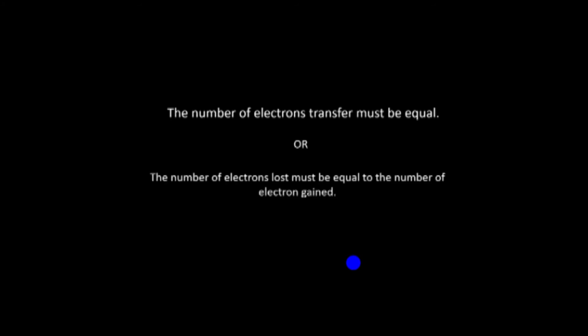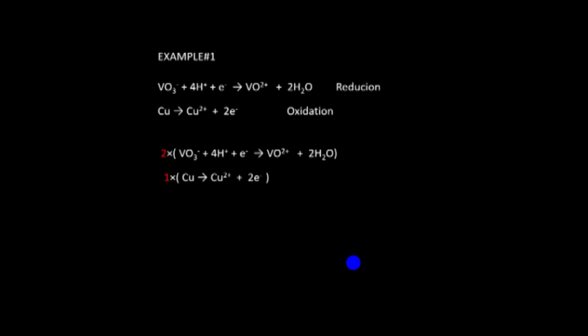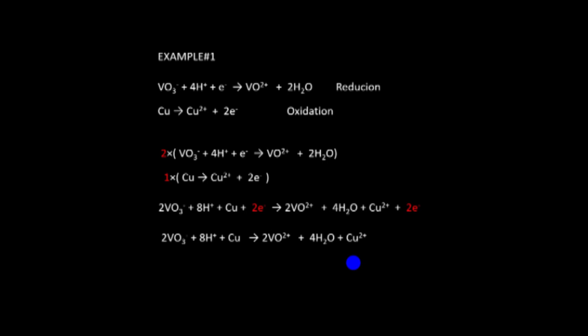For balancing redox equations, the key rule is: the number of electrons lost in oxidation must equal the number of electrons gained in reduction. First find oxidation numbers, then identify the oxidation and reduction half-reactions, then balance electron transfer. In the first example, one electron is gained and two electrons are lost, so we multiply the first equation by two and the second by one. Then add left to left and right to right, cancel the electrons, and obtain the final balanced equation.